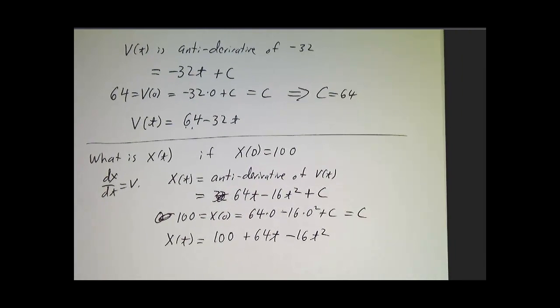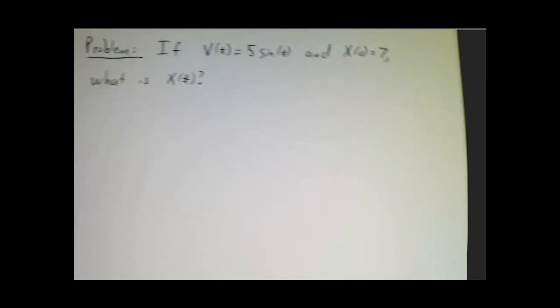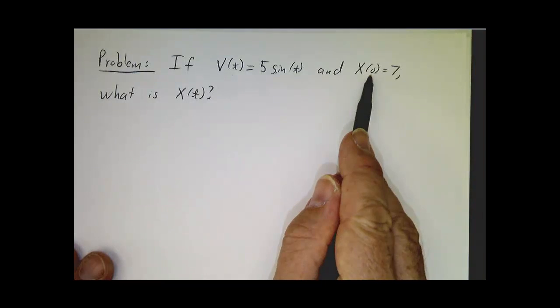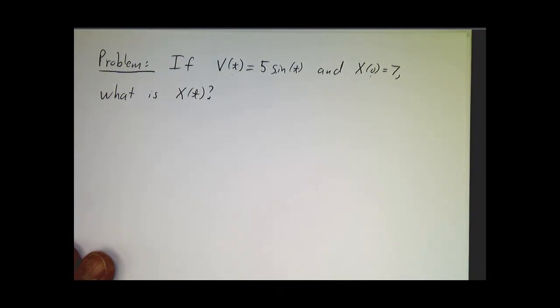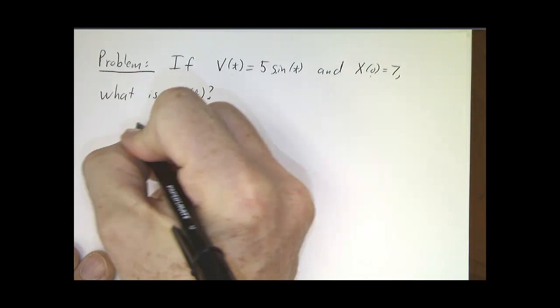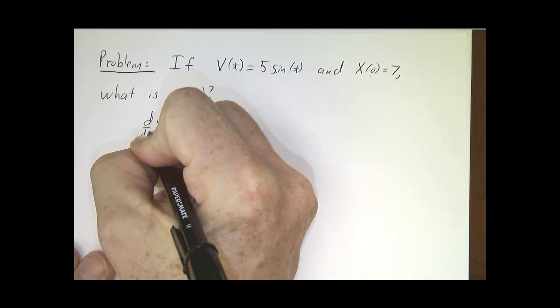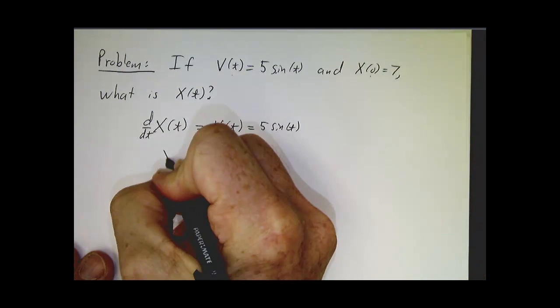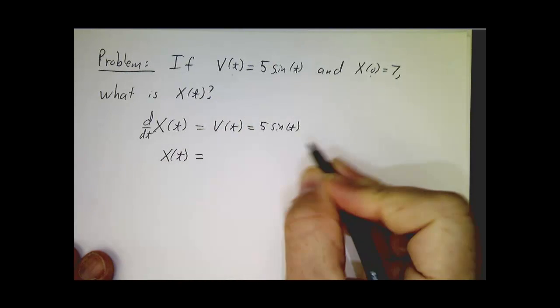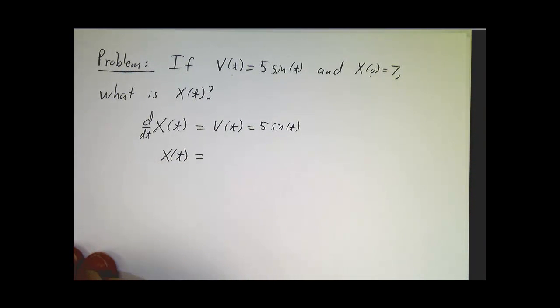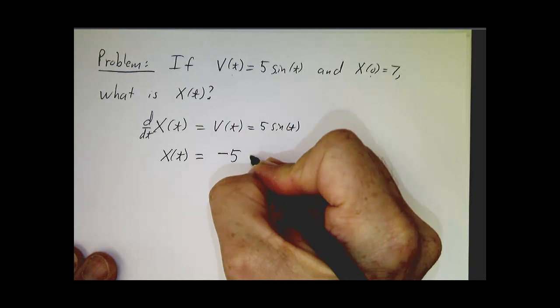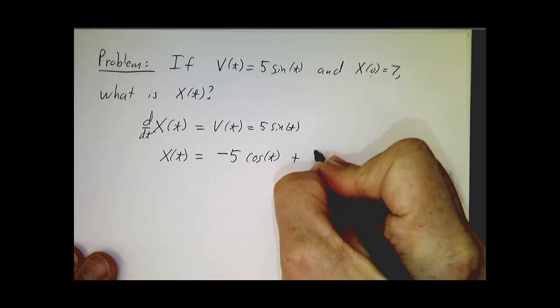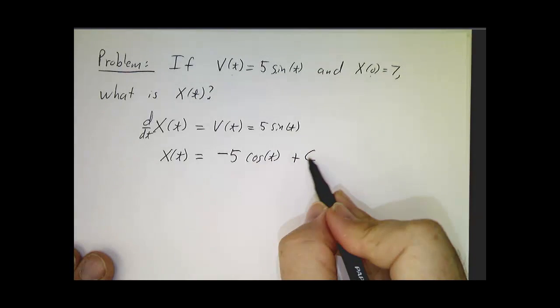One last problem. Suppose I gave you a particle that's moving with velocity 5 sin(t) and initial position 7. We need to know that the derivative of the position is the velocity, so our position is something whose derivative is sine. We know that the derivative of negative cosine is sine. So this is an antiderivative. It's not necessarily the one we want. The one we want is that plus a constant.